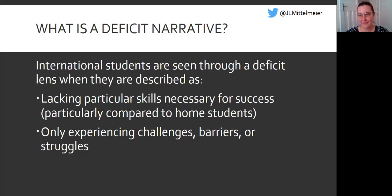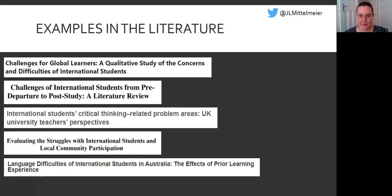When you're reading an article about international students, think about where you're seeing deficit narratives and where the study might be framed from a deficit perspective. Here are some examples from the literature — I've only presented the titles because I don't want to name specific authors, as I see this as a systemic issue across the field present at all levels, often accidentally — even in my own research when I look back. But just from the title you can see that framing: international students face challenges as global learners, they have problems with critical thinking, they struggle with local community participation, they have language difficulties.